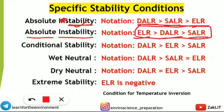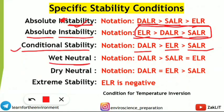Similarly, conditional stability: you just need to know these conditions — no need to go into deep definitions. In the conditional stability condition, the environmental lapse rate is in the mid portion, that is in between the dry adiabatic lapse rate and the saturated adiabatic lapse rate. So the least value is the saturated adiabatic lapse rate. When ELR is between DALR and SALR, it is called conditional stability.